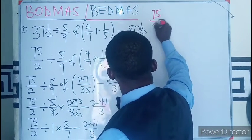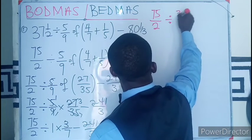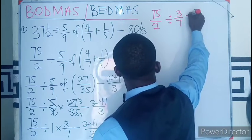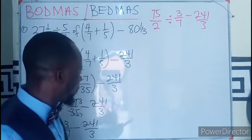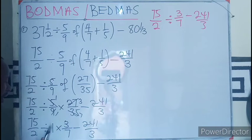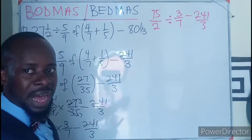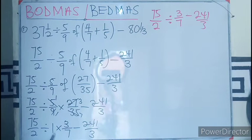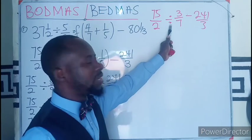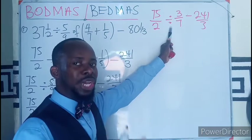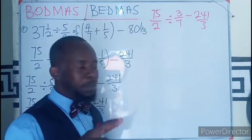This is going to be divided by 3 over 7 minus 241 over 3. We are still holding our division. This is just giving us any number multiplied by 1 still produces the same answer. So no matter how we multiply, we still get the same answer. So now let's go to our division. In our previous lesson, we learned that division can be changed to multiplication while the second fraction will be flipped.